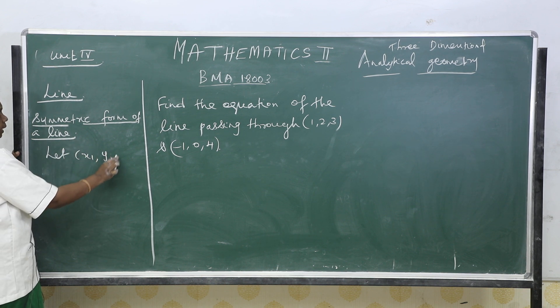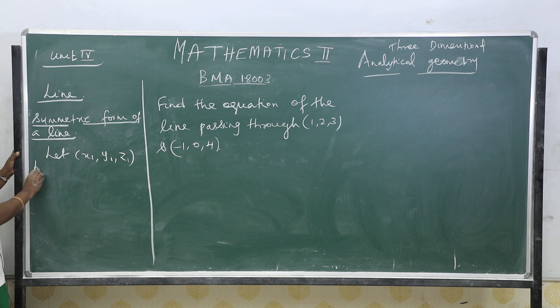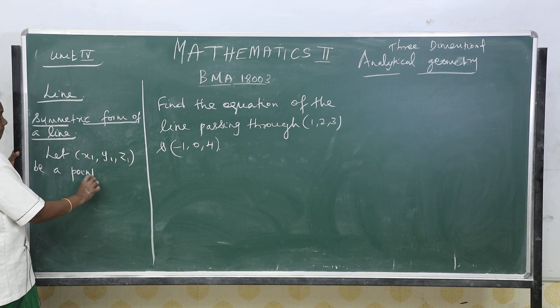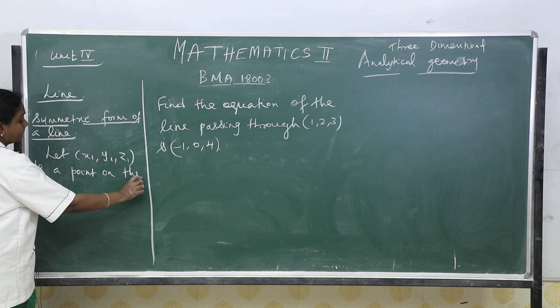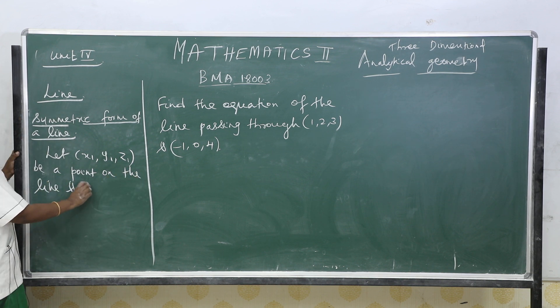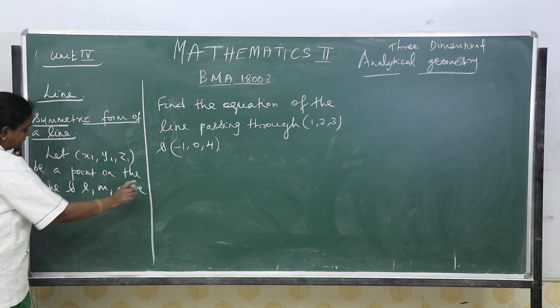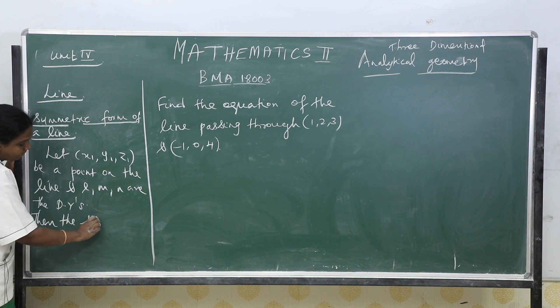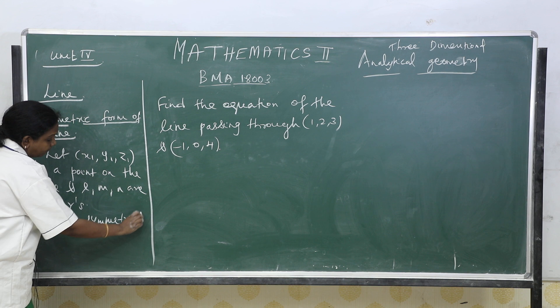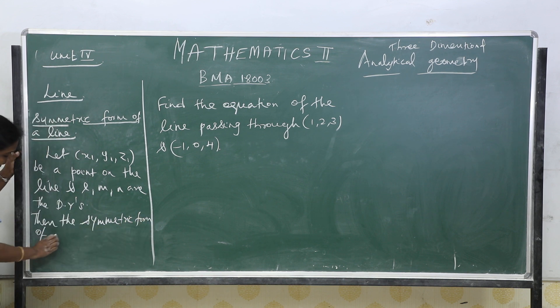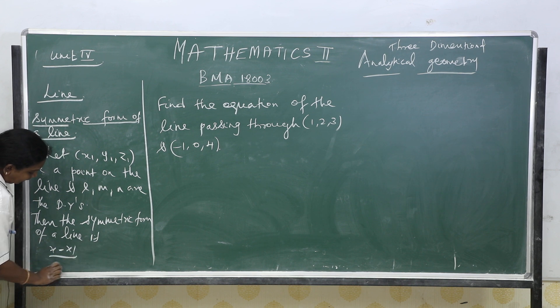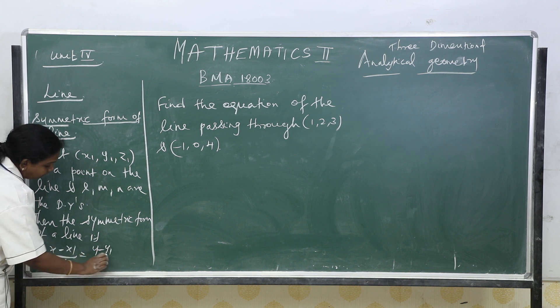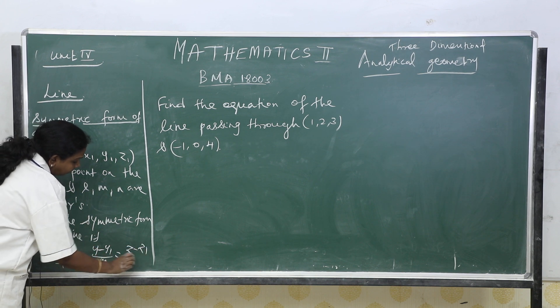Let x1, y1, z1 be a point on the line. And l, m, n are the direction ratios. Then the symmetric form is x minus x1 by l equals y minus y1 by m equals z minus z1 by n.